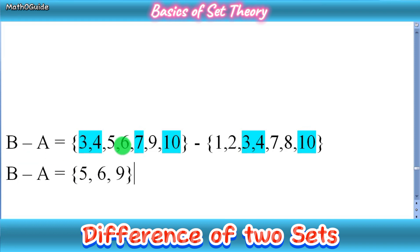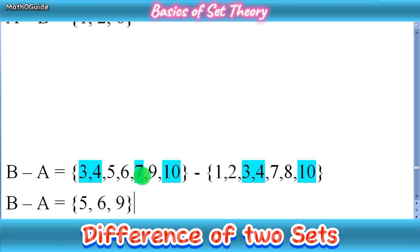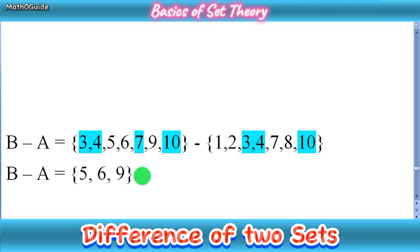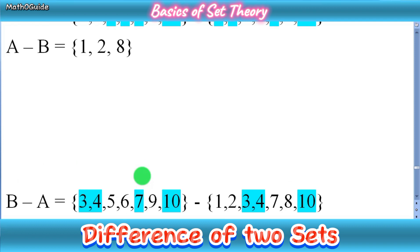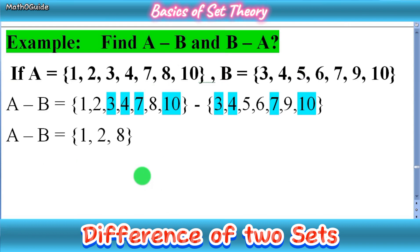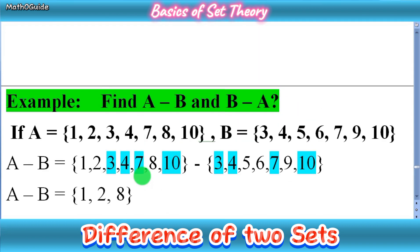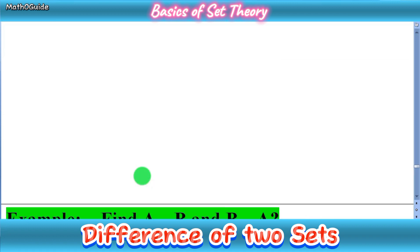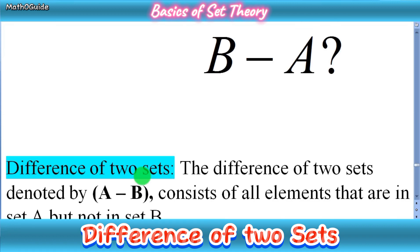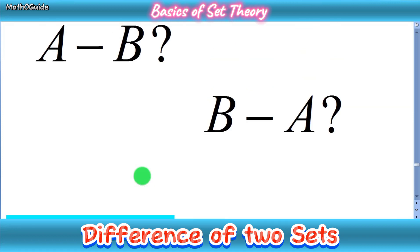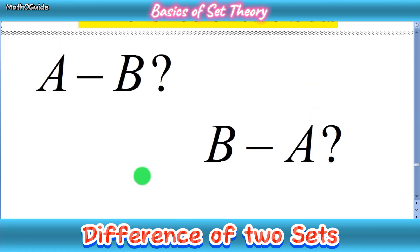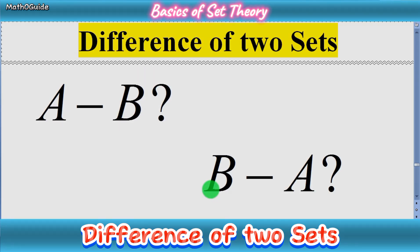So B minus A has only three elements — 5, 6, and 9 — that are not present in set A. I hope you got the basic idea of how to find the difference of two sets. Thanks for watching, and don't forget to subscribe to my channel.